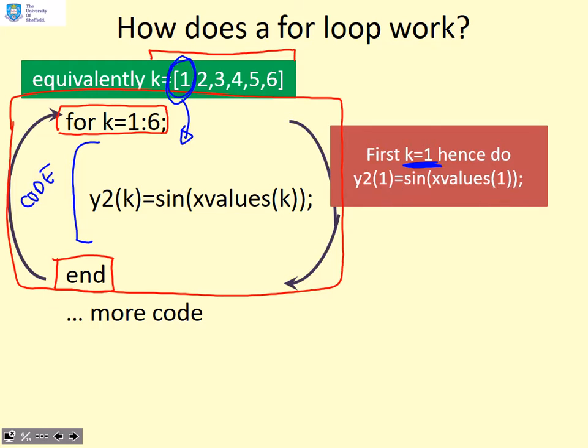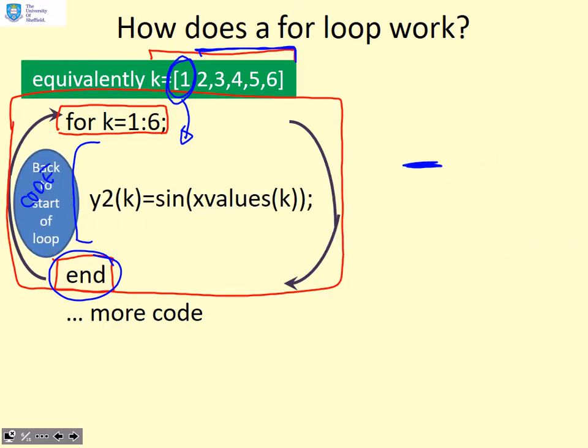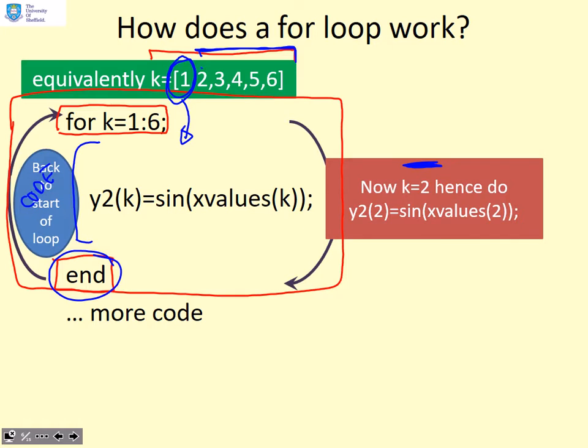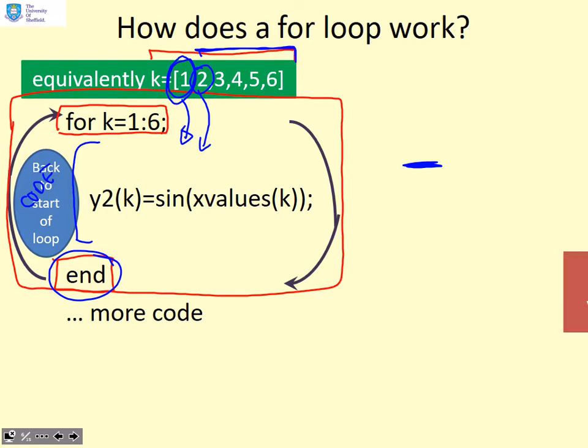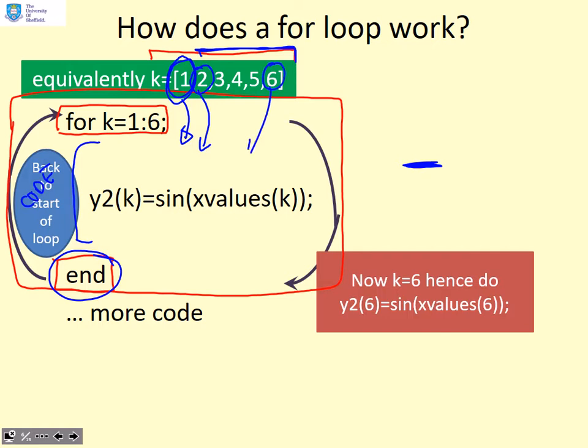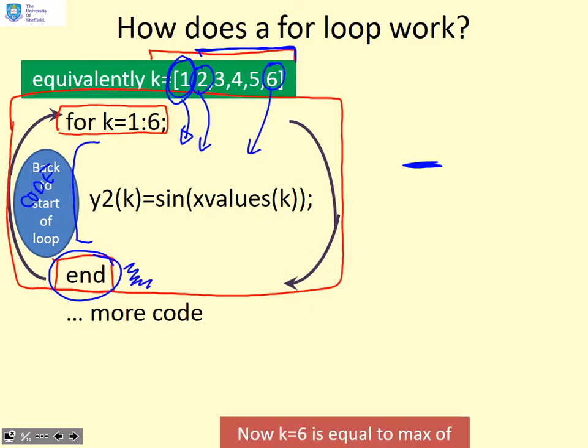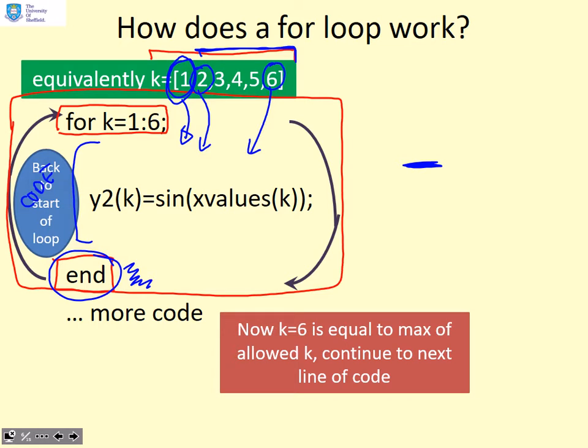Having run all the code, we get to the end statement. When we get to the end statement, the code is going to say, what's the value of k? Here we'll say the value of k equals one. Then it will look up here and say, there's a number of values of k we haven't used yet. So it will go back up to the start of the loop and take the next value of k, which is two. We'll run the loop with k equals two. Then we get to the end, it will run with k equals three, then four, then five, then six. When we've run through with k equals six and get back to this end statement, when k equals six, we notice we've now used all the values of k. MATLAB will look and say, I've used all my possible values of k, I haven't got any more, so now I continue with the next line of code.